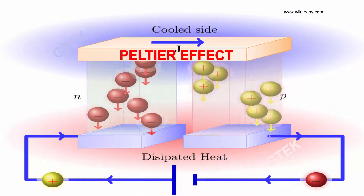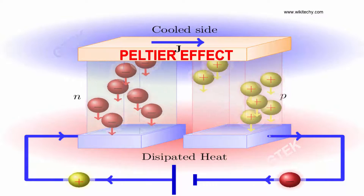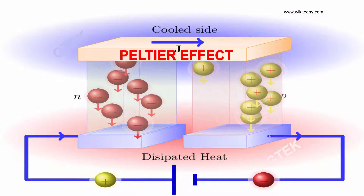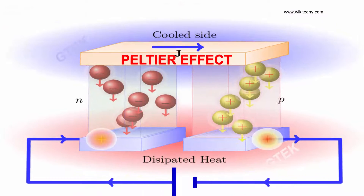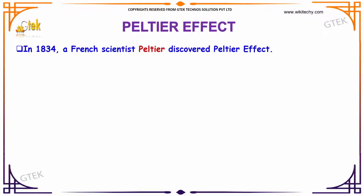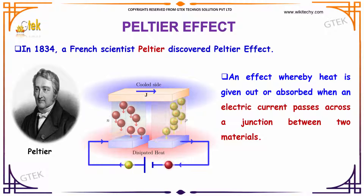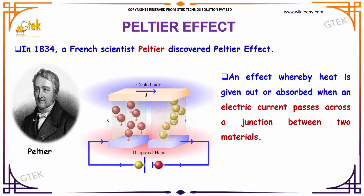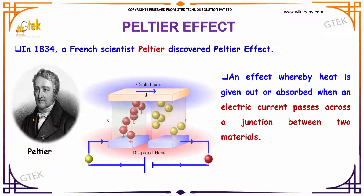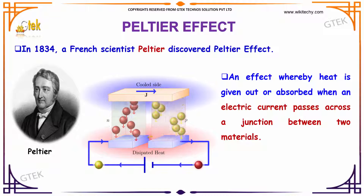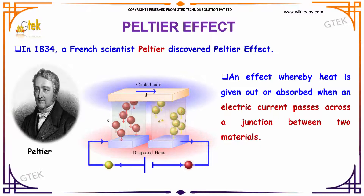Based on the perspective of heat generated, we got a different concept of Peltier effect. In 1834, a French scientist Peltier discovered the concept of Peltier effect — an effect whereby heat is given out or absorbed when an electrical current is passed across a junction between two materials.